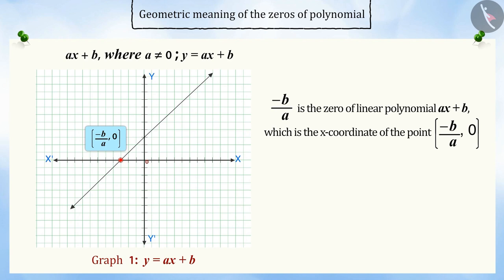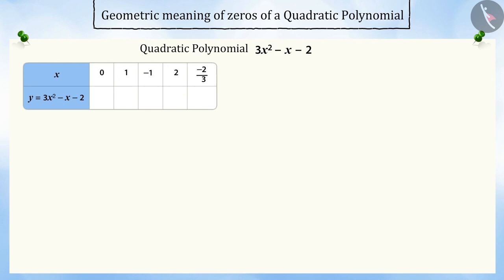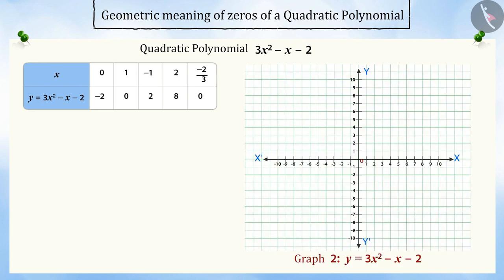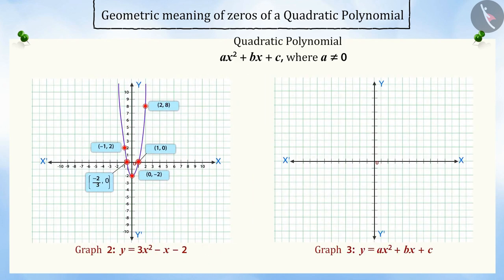Using this conclusion, we will try to understand the geometrical meaning of a quadratic polynomial. Let us take a quadratic polynomial 3x squared minus x minus 2. If we substitute the values of x in y equal to 3x squared minus x minus 2 and plot these points on the graph, we will get a parabola. Therefore, we can conclude that the graph of a quadratic polynomial ax squared plus bx plus c, where a is not zero, is a parabola.